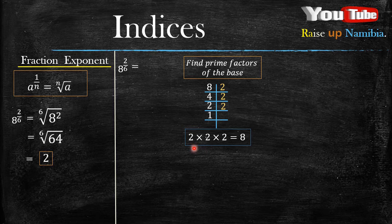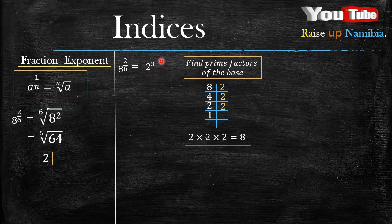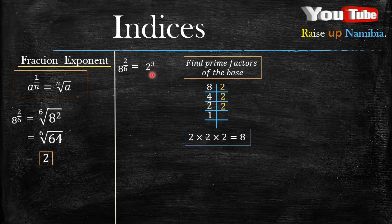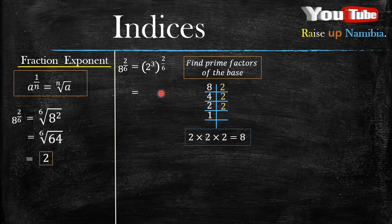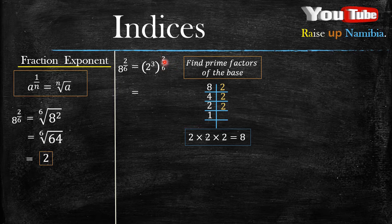If we write 2 times 2 times 2 in exponential form, it looks like 2 raised to the power 3. Remember, the exponent means the base is multiplied by itself the number of times shown in the exponent — so this means 2 multiplied by itself 3 times. After we get this in exponential form, we put it in brackets and bring our exponent, which is the fraction, outside the bracket. We then work with the fraction using the power law from part 1, which means multiplying the exponents.